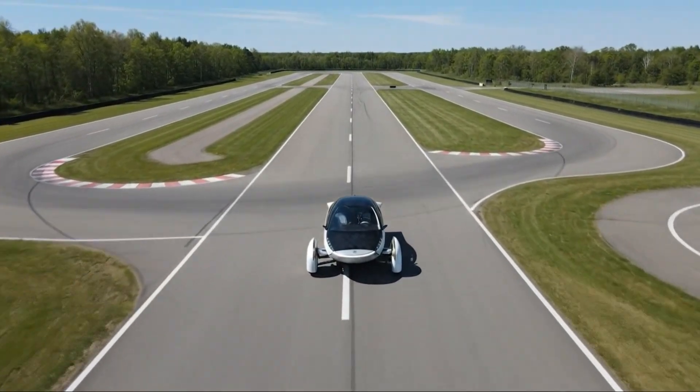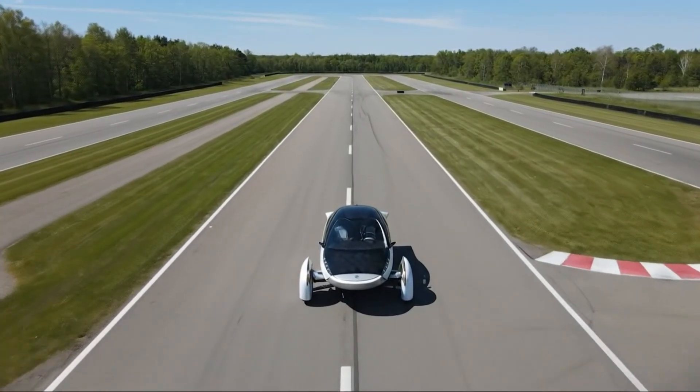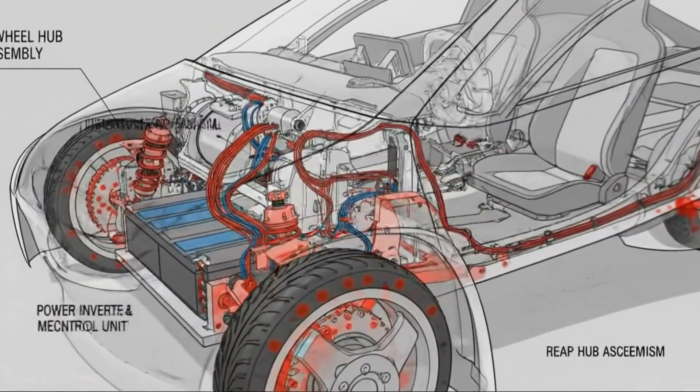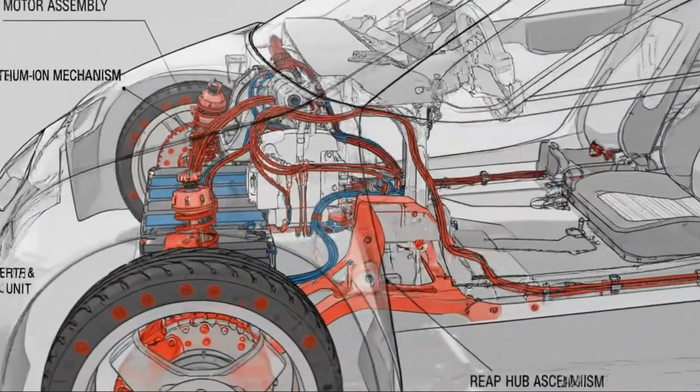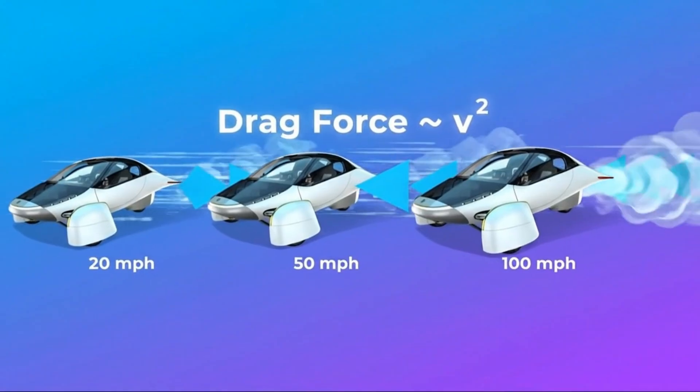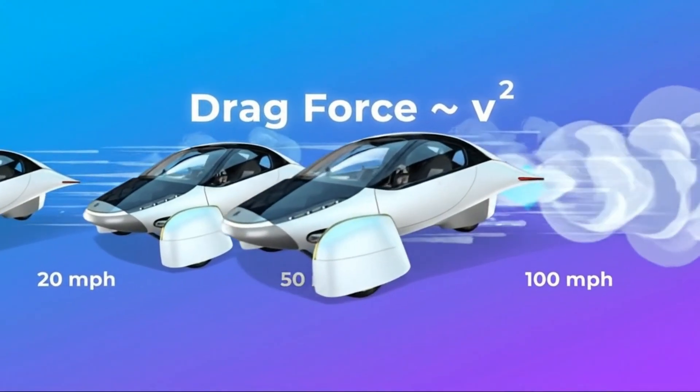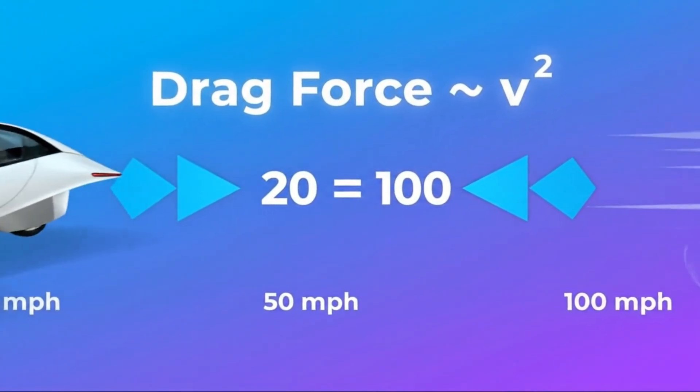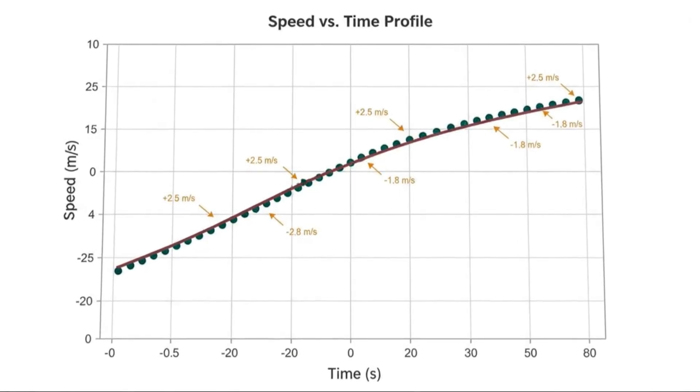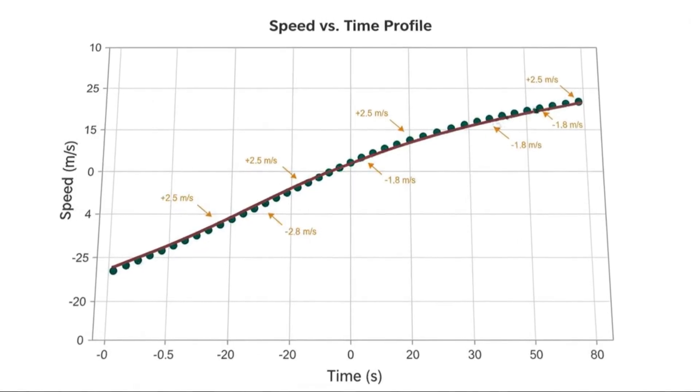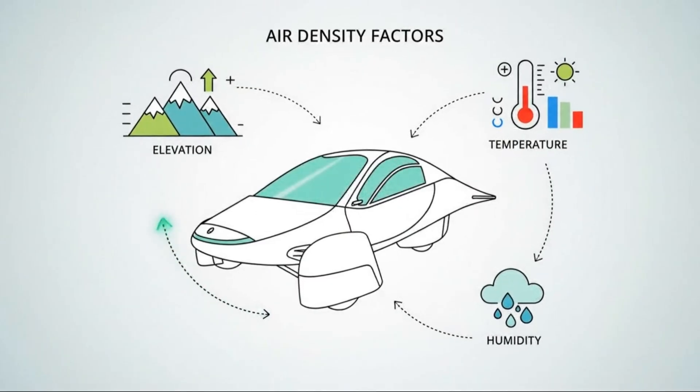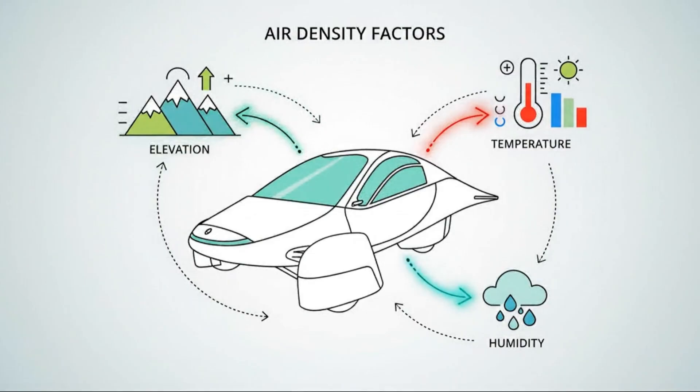To understand how Aptera achieves this, everything begins with a single number: 100 watt-hours per mile. That figure changes everything. Most modern electric vehicles consume between 300 and 350 watt-hours per mile. Even some of the most efficient EVs on the market struggle to dip below 250. Aptera's target isn't a minor improvement, it's a radical shift.